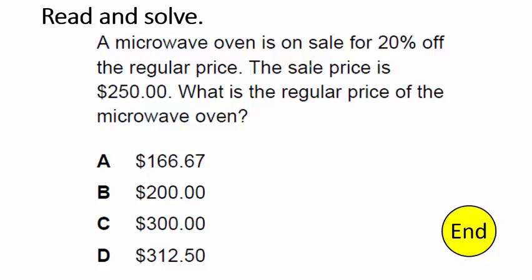A microwave oven is on sale for 20% off the regular price, and the sale price is $250. What is the regular price of the microwave oven? We need to figure out what was the price before they took the discount. We don't know that price. What we do know is that the sale price is $250. So we took 20% off of some number to get to $250. If we think of our original price as X, and X is 100%, we're going to set up a proportion. We paid 80% of the original price.